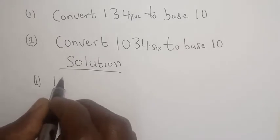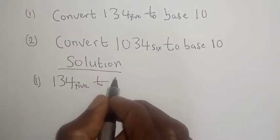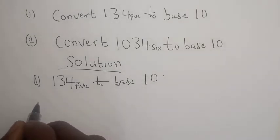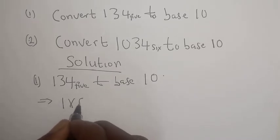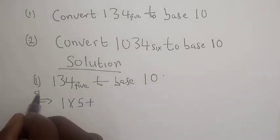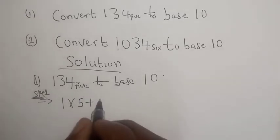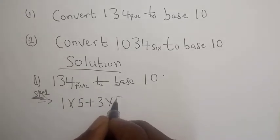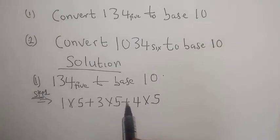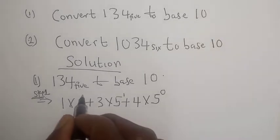Convert 134 base 5 to base 10. Step 1: this implies that we have 1 times 5, plus 3 times 5, plus 4 times 5. Starting from the right-hand side, we assign: 5 raised to power 0, 5 raised to power 1, and 5 raised to power 2.